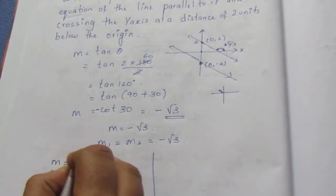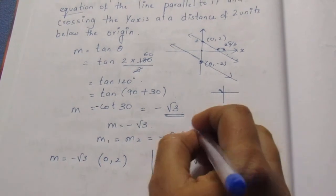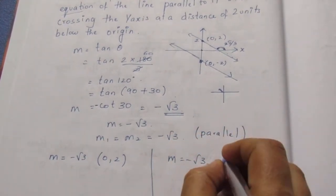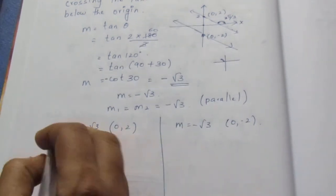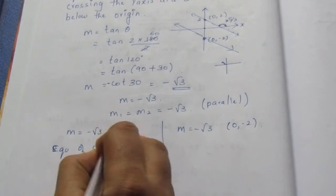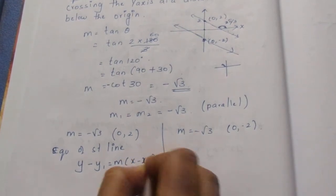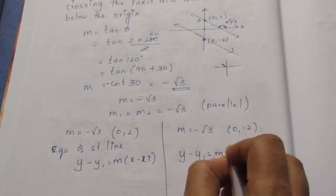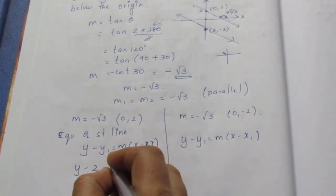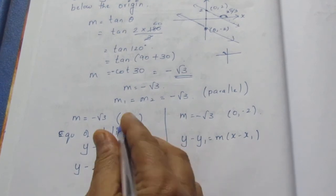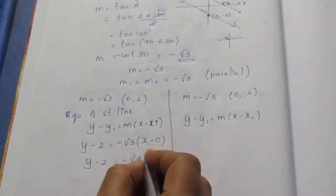We know slope m = −√3 and one point is (0, 2). Using the slope-point formula — the equation of a straight line is y − y₁ = m(x − x₁) — substituting the values: y − 2 = −√3 · (x − 0). Bringing √3x to the other side, it becomes √3x + y − 2 = 0.